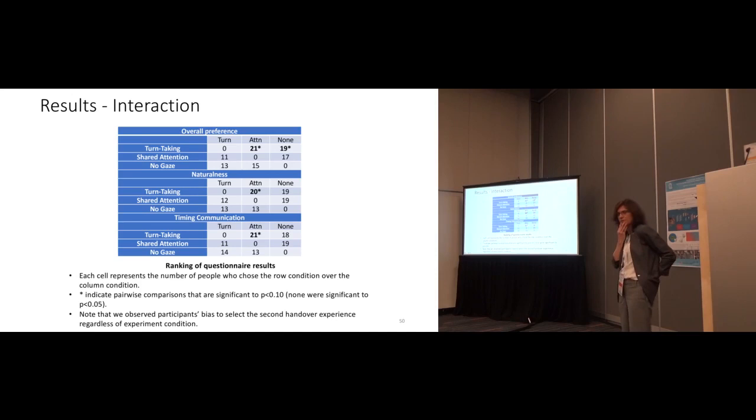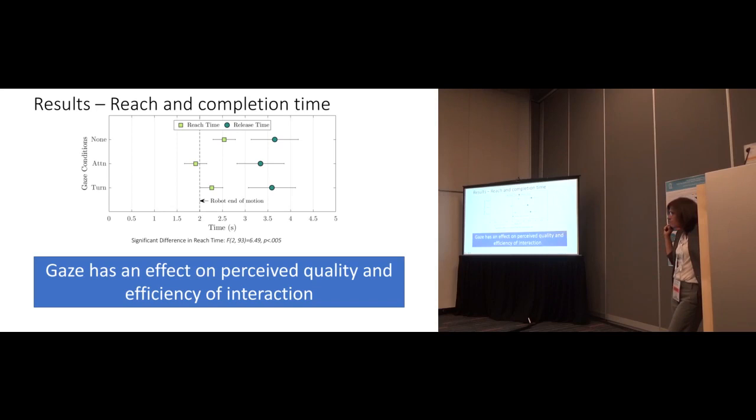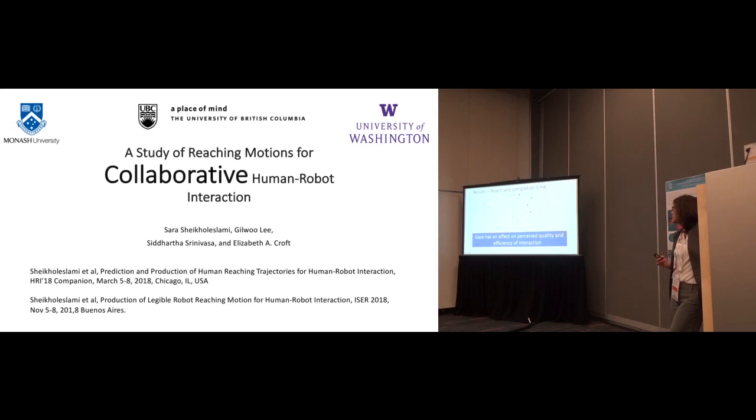What was very interesting to us is that there was a strong preference. People did not like no-gaze. But the shared attention, both looking at the bottle, where it's going, people did appreciate that. People did not appreciate the turn-taking. Again, it might be because there were a lot of engineers and computer science students. But what was more interesting was that the shared attention gaze actually had people launching into getting the bottle sooner. It actually caused people to go and get the bottle when the robot was looking at where the bottle was. So that cue had an effect on how people went and completed the task.